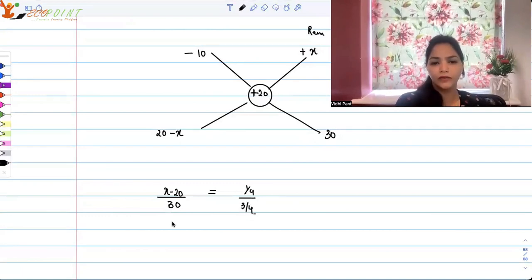So this will give you X minus 20 into 3 by 4 is equal to 30 upon 4. And that gives us, of course, 4 cancels. And this is 3X minus 60 is equal to 30.